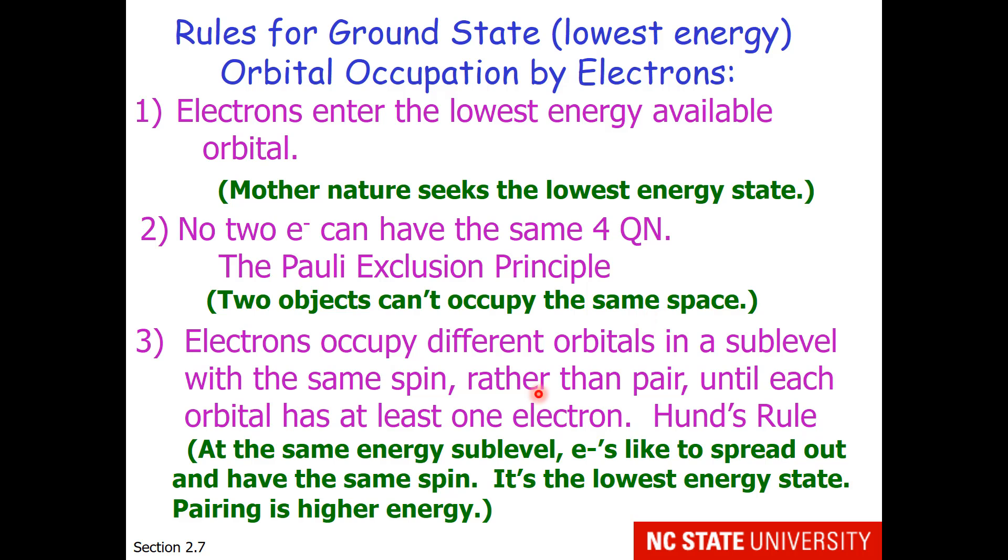The last rule says that electrons occupy different orbitals in a sublevel with the same spin, rather than pair, until each orbital has one electron. This is known as Hund's rule. When electrons are paired in the same orbital, this increases their energy. So to have the lowest energy state, the electrons like to spread out and have the same spin.